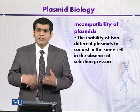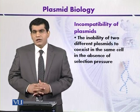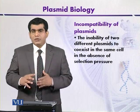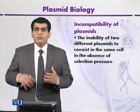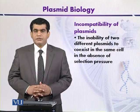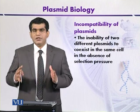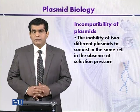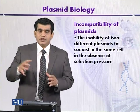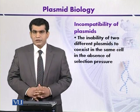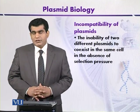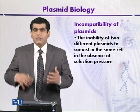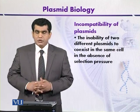In addition to that, different plasmids may belong to the same incompatibility group. For example, if plasmids A, B, C, D, E and so on are incompatible with each other, we can say that they belong to the same incompatibility group.